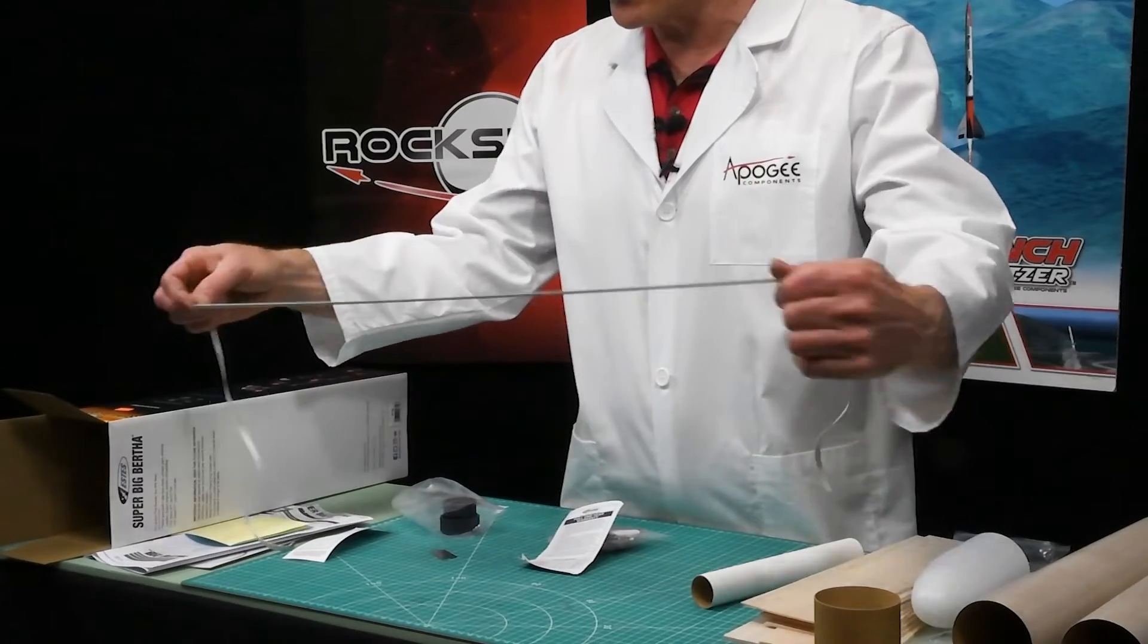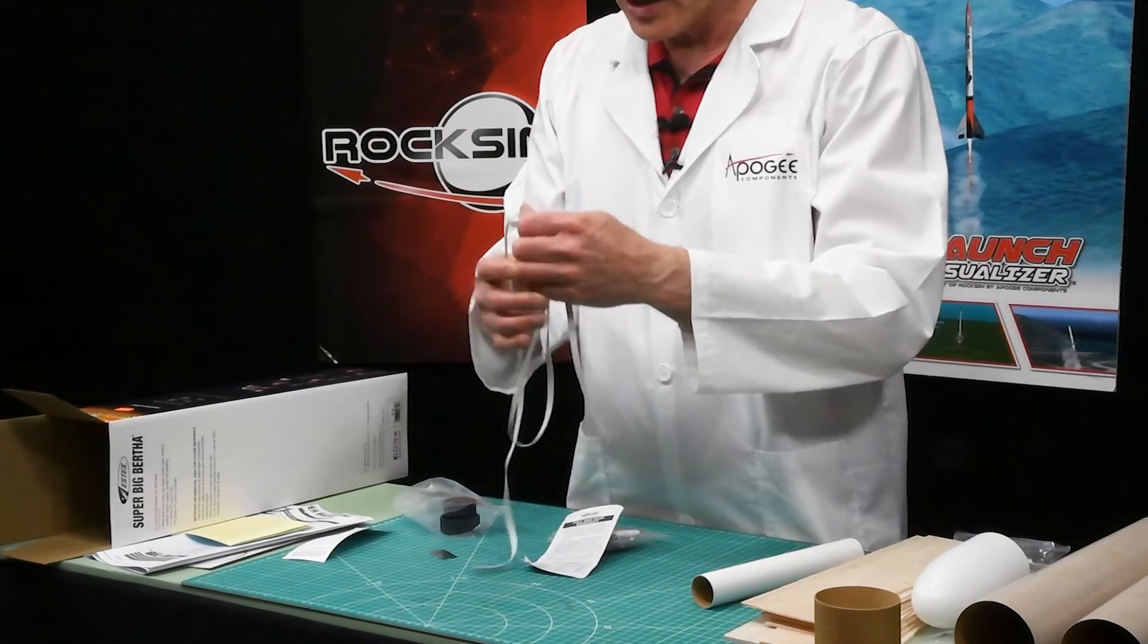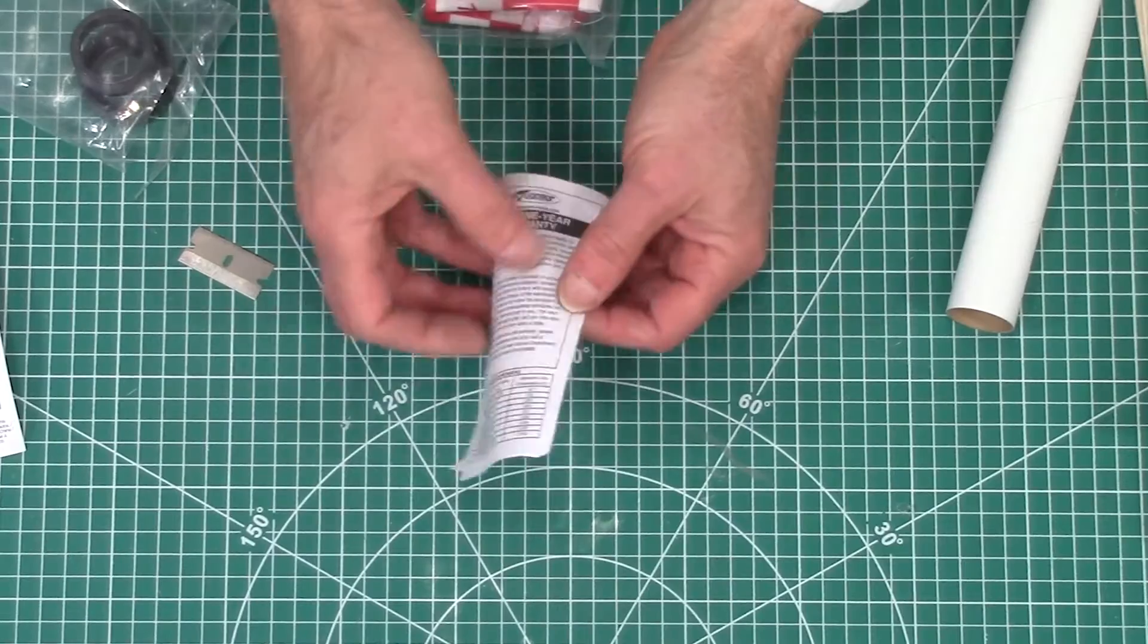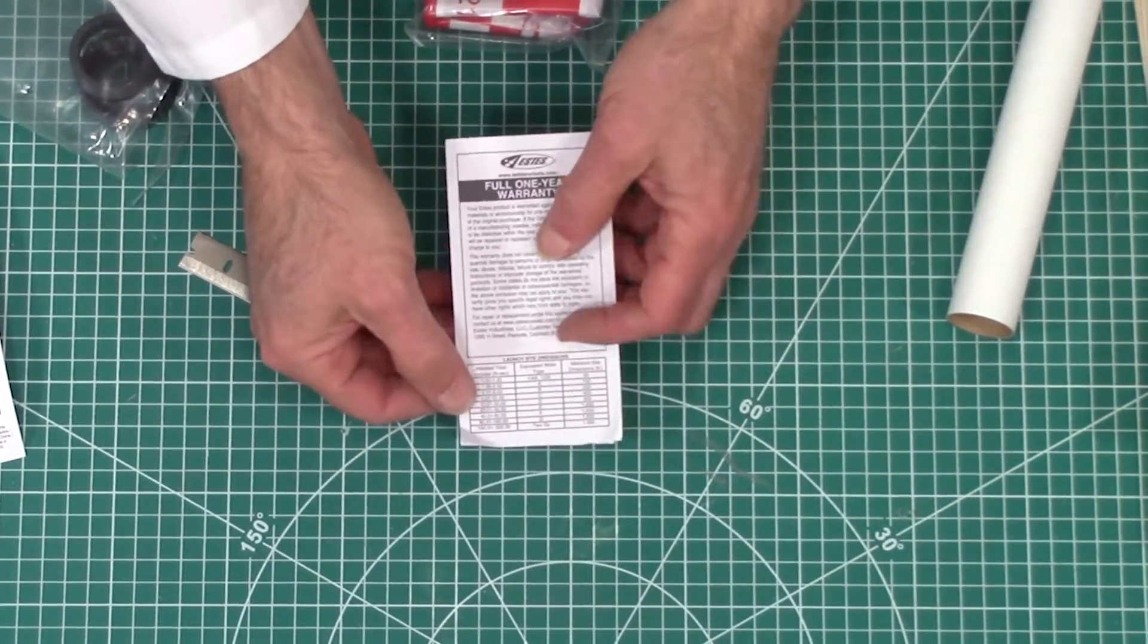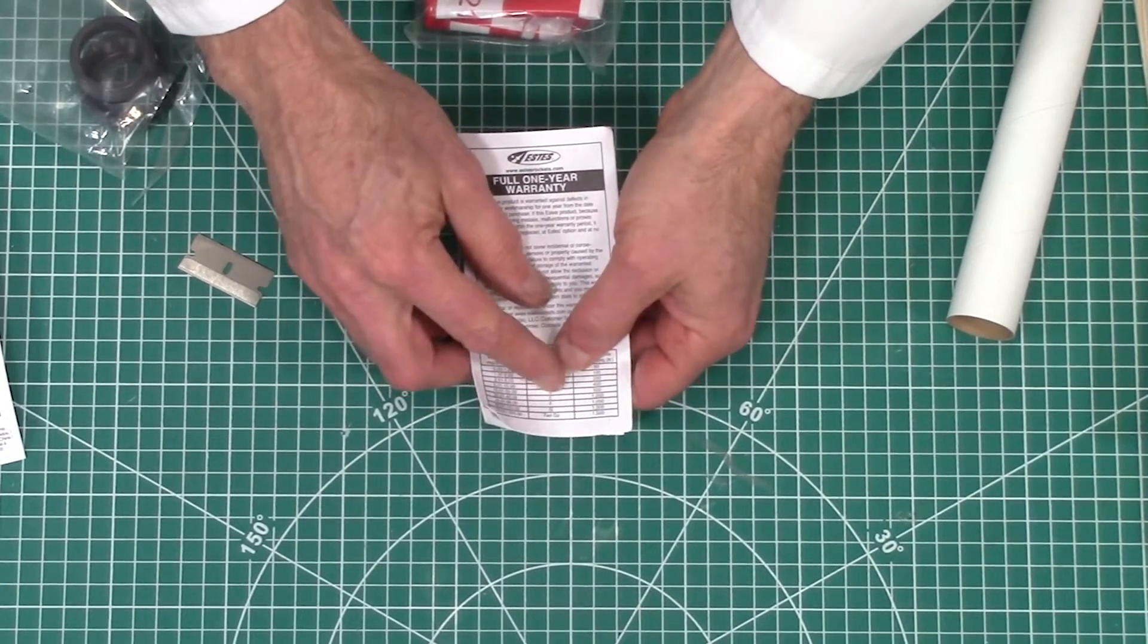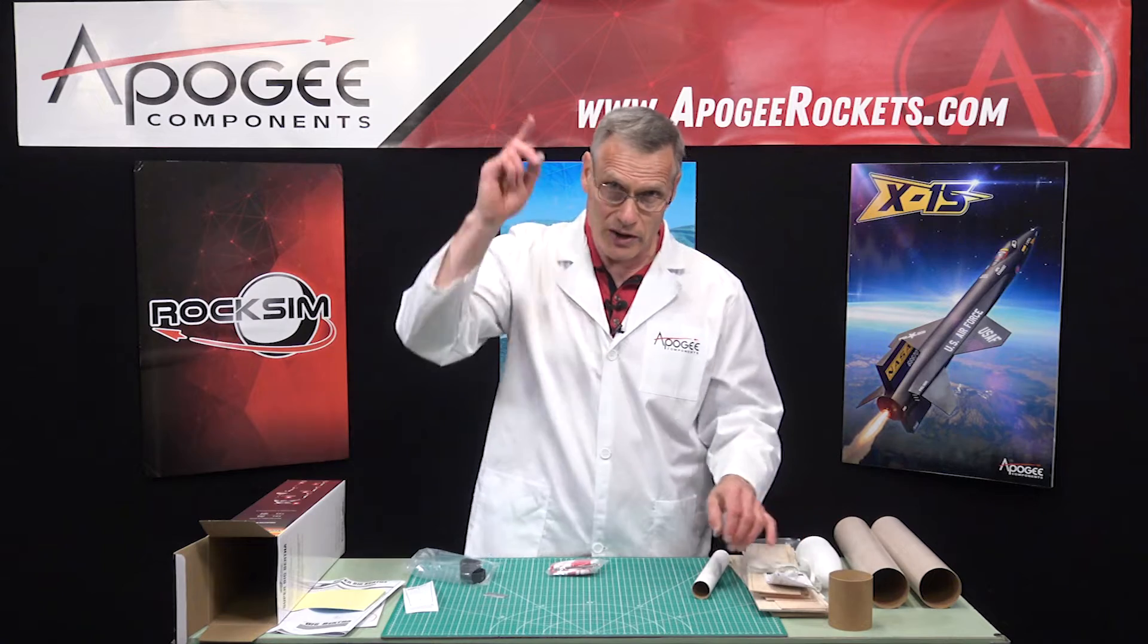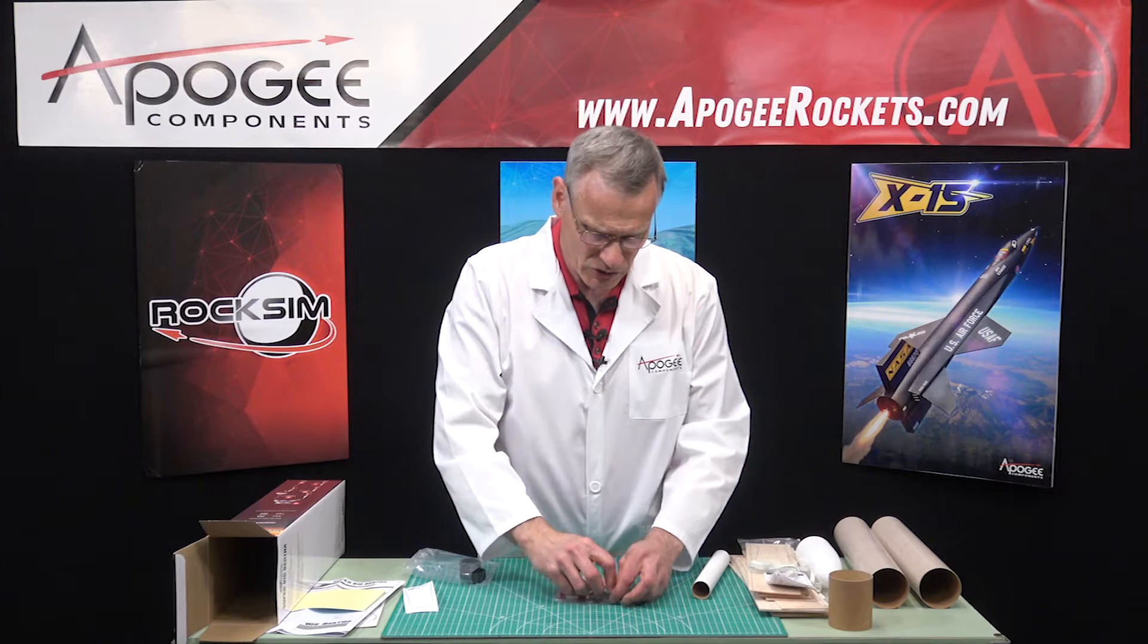And there, this is the shock cord, and it is just rubber, kind of elastic. Estes always uses that on their kits. That should work fine for you. This right here is the warranty card, and it also includes some charts, like launch site dimensions. So, this is going to be launching on E's and F motors, and so you're going to need a launch site that it's at least 1,000 feet on a side. The higher the rocket goes, the further it can drift. So, you'll probably want a fairly good-sized field.